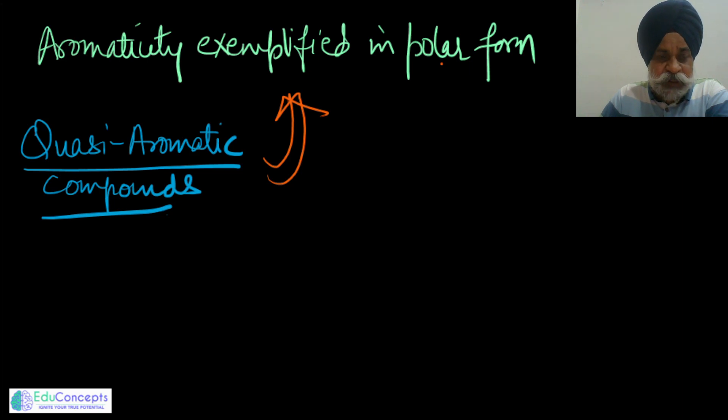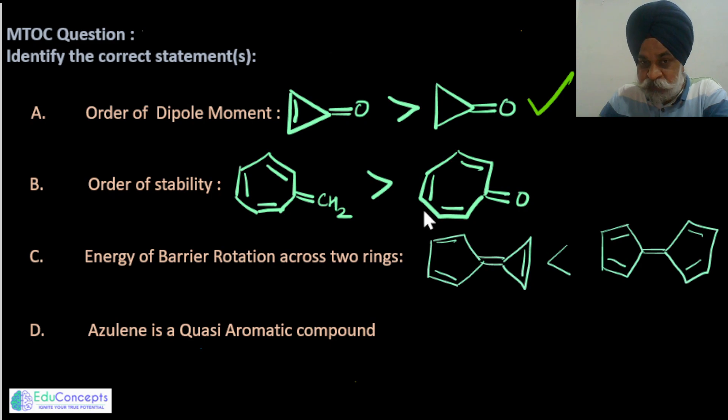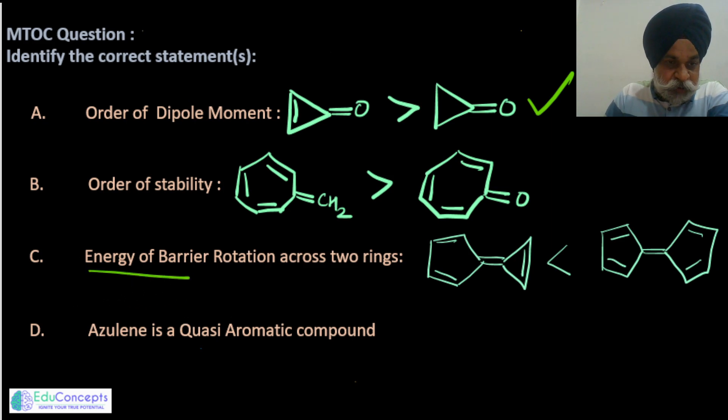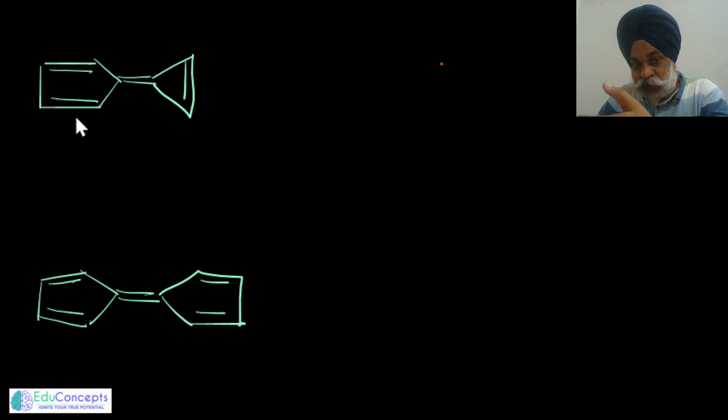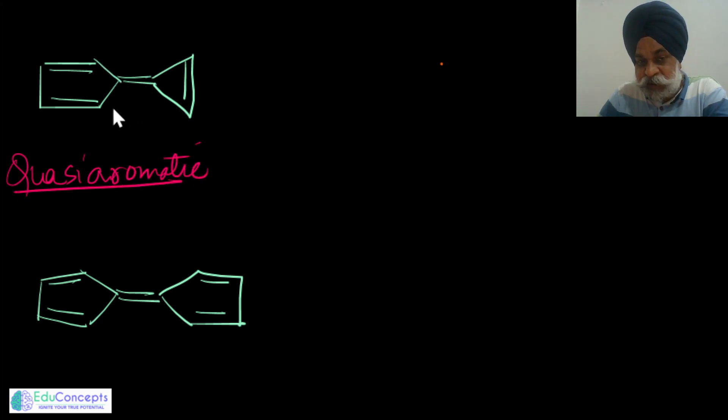Moving to the energy barrier aspect — given the two structures, if I do the polarization of the pi bond in question regarding rotation: if it can rotate with ease the energy of rotation barrier is less, if it requires more energy the barrier is high. The first molecule shown can also be said to be quasi-aromatic, because on polarization of one bond, we can analyze what it results in.